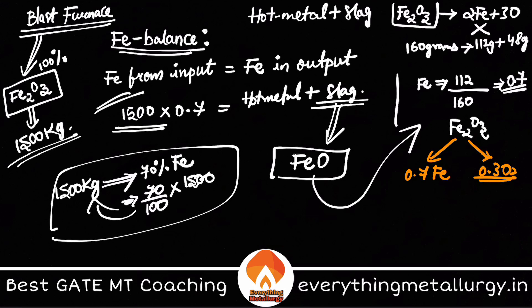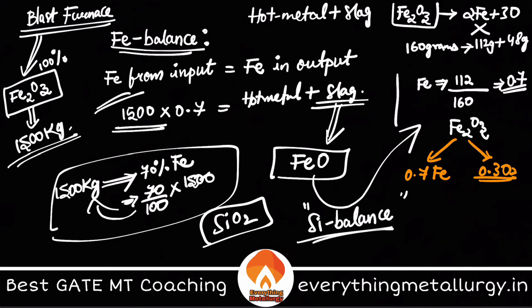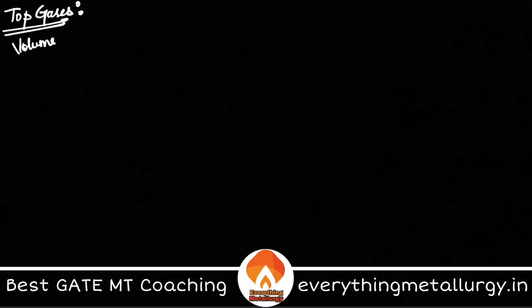Using mass fractions you can similarly calculate for many species. For example, if you are doing a Si balance, you need to take the equivalent weight of Si present in SiO₂. Using these principles you can calculate the amount of ore required and the amount of slag generated. Another important thing commonly asked in GATE exams is the volume of top gas, for which you do a carbon balance.